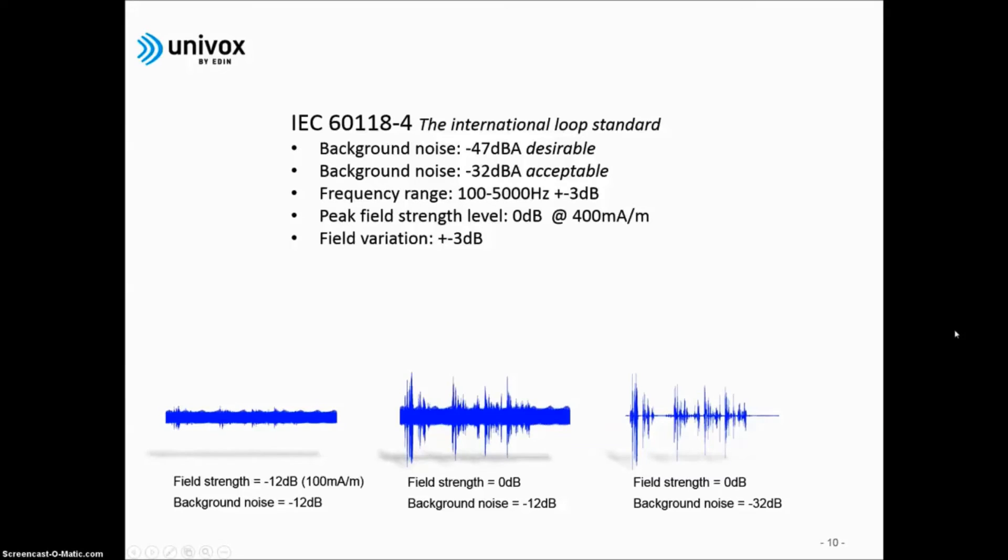The first audio example demonstrates a loop system operating where there is too much background interference and where the audio material peaks do not reach the required 400 mA per meter. Notice how the background noise consumes much of the message and the poor intelligibility. Sent directly into your ear, kind of like Wi-Fi for hearing aids. For those with hearing problems, it can make hearing a totally different experience.